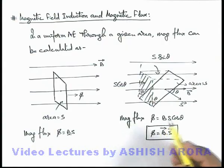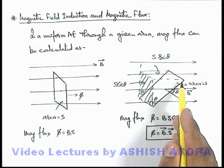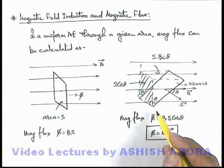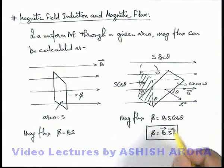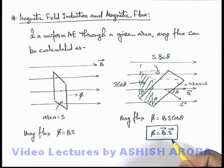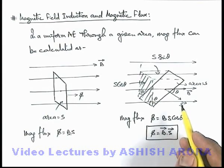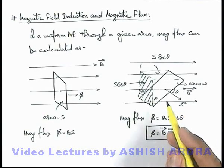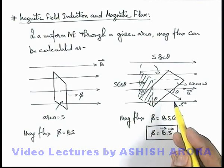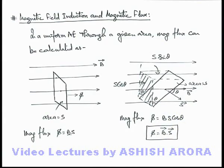There, if electric field strength is E through a given area, the electric flux is given as E dot S in a uniform electric field. Similarly, here if magnetic induction is non-uniform, we can calculate magnetic flux — let's continue on the next sheet.